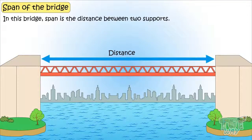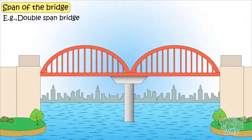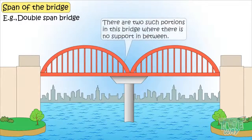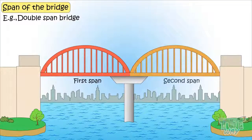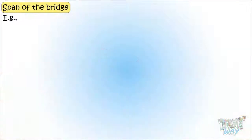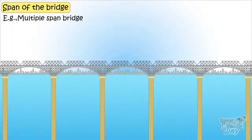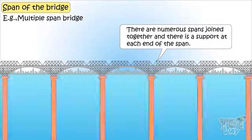Here is an example of a double-span bridge. There are two such portions in the bridge where there is no support in between — this is one span and this is the second span, with support at each end. Here we also have a multiple-span bridge, where numerous spans are joined together and there is support at each end of the span.